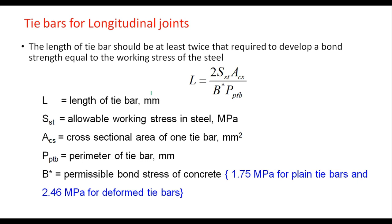The length of the tie bar should be at least twice that required to develop a bond strength equal to the working stress of the steel. The length is given by: L = 2 × ST × Acs / (B* × PTB), where ST is the allowable working stress in steel, Acs is the cross-sectional area of one tie bar in mm², PTB is the perimeter of the tie bar, and B* is the permissible bond stress of concrete — taken as 1.75 MPa for plain tie bars and 2.46 MPa for deformed tie bars.